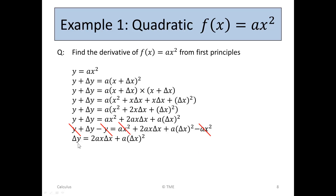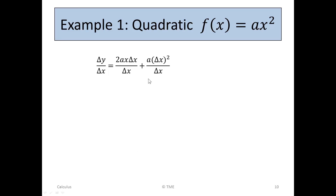We can start eliminating terms. y and minus y cancel, and ax squared and minus ax squared also cancel. So we're left with delta y equals 2ax delta x plus a times delta x squared. Dividing across by delta x, we get delta y over delta x equals 2ax plus a times delta x, since delta x over delta x cancels and delta x squared over delta x reduces to delta x.